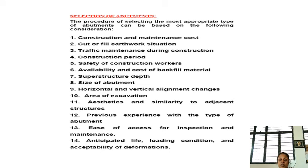How should an abutment be selected? The selection is normally based on the following considerations: construction and maintenance cost, cut or fill earthquake situation, traffic maintenance during construction, construction period, safety of construction workers, availability and cost of backfill material, superstructure depth, size of the abutment, horizontal and vertical alignment changes, area of excavation, aesthetics and similarity to adjacent structures, previous experience with the abutment type, ease of access for inspection and maintenance, anticipated life, and loading conditions and accessibility of deformation.